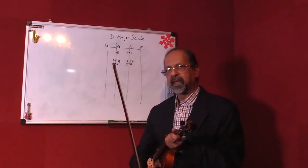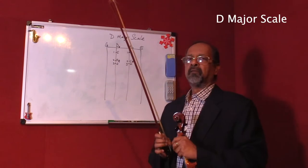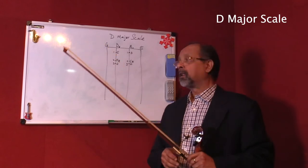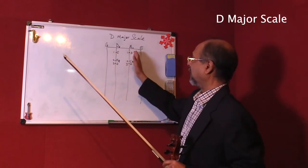The next scale that we will be playing is the D major scale, which will be played on one octave, and we will be playing this scale on the two strings, that is the D and A.